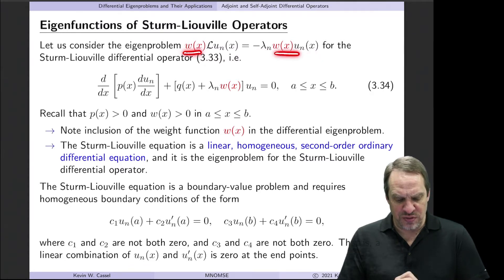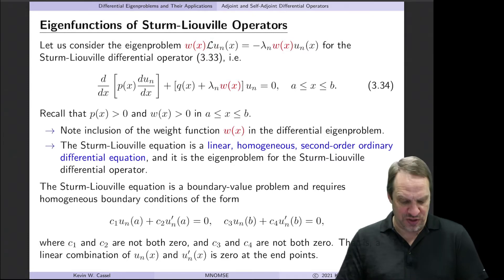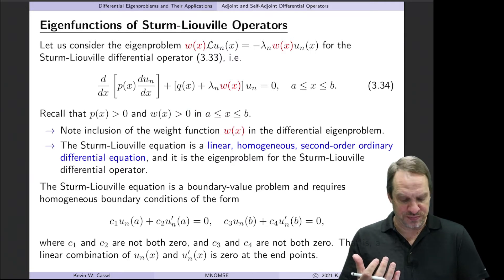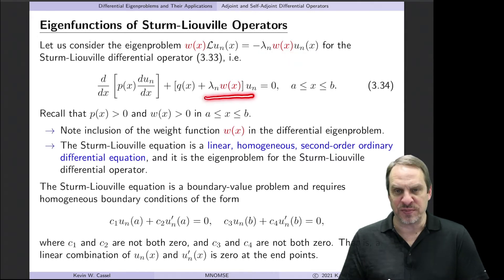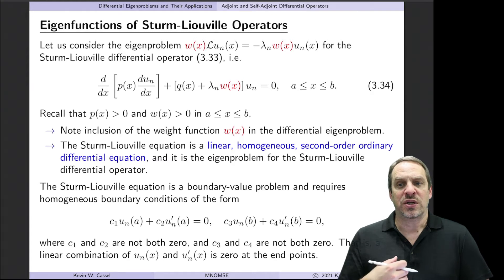Here you'll notice we're going to include the W, the weight function on both sides, just so it cancels out. And then the L here is our Sturm-Liouville form. We have d/dx of p times du/dx plus q times u. That is the Sturm-Liouville differential operator operating on u. And then from the eigenproblem, we also have the lambda times w times u term as well. This now is a differential equation. We'll call that the Sturm-Liouville differential equation.